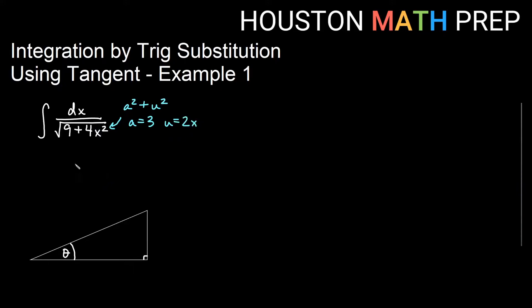I can see that my a equals 3 and my u equals 2x, because 2x times 2x gives me 4x squared. Remember that we let u equal a tangent of theta, so in this instance, 2x equals 3 times tangent of theta.